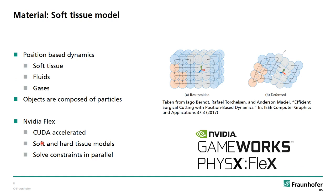Position-based dynamics is a method to simulate soft tissue, fluids, and gases. Here you see one particle — the whole mesh is converted into particles. We use the NVIDIA Flex library for position-based dynamics. NVIDIA Flex is CUDA-accelerated, meaning the simulation runs on the graphics card and has great performance. You can model soft and hard tissue, and the constraints are solved in parallel.